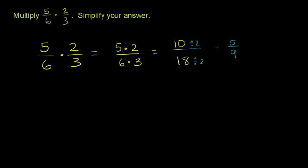So let me divide the numerator by 2, and this becomes a 1. Let me divide the denominator by 2, and this becomes a 3. And then you have 5 times 1 is 5, and 3 times 3 is 9. So it's really the same thing we did right here. We just did it before we actually took the product.